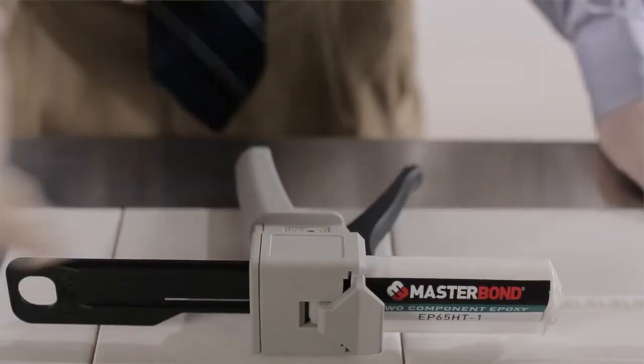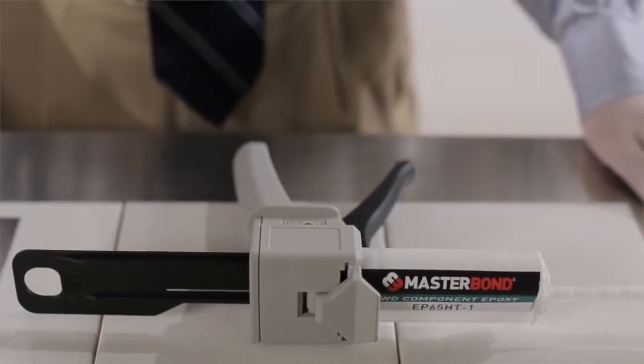A dispensing gun with a pre-measured weight ratio of 10 to 1 will automatically mix part A and part B of this two-component system.